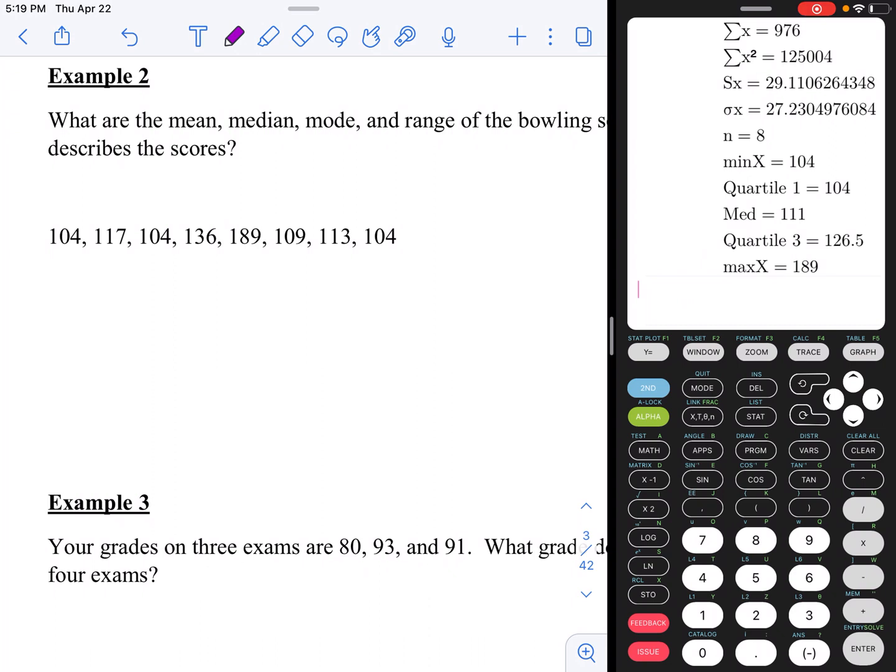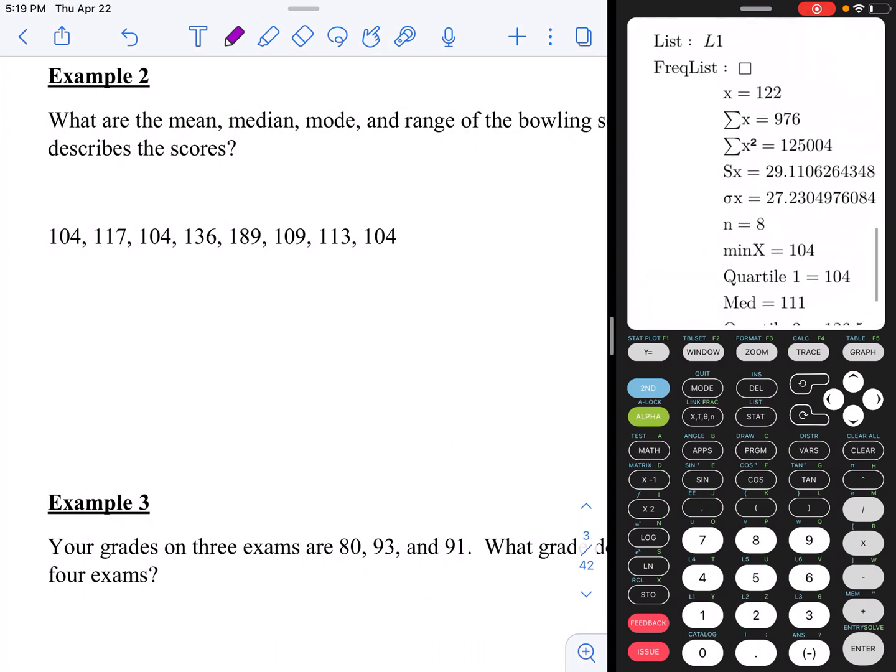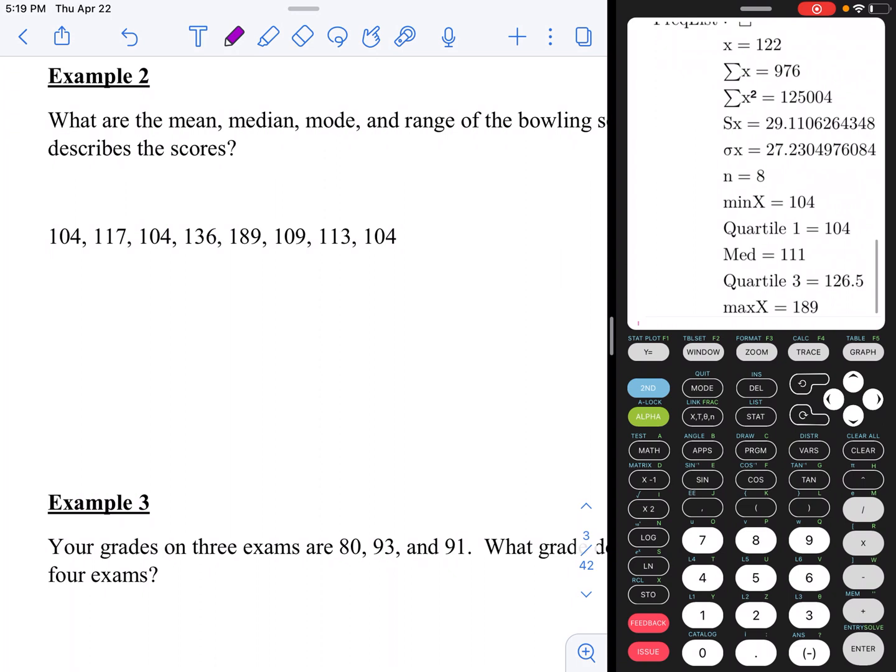Hit enter and all the data pops up. So that first number, you are going to scroll up to the top and it says x equals 122. That is going to represent our mean. So our mean is that first number, that's the average, is 122.